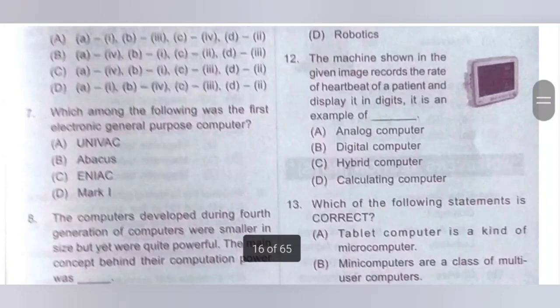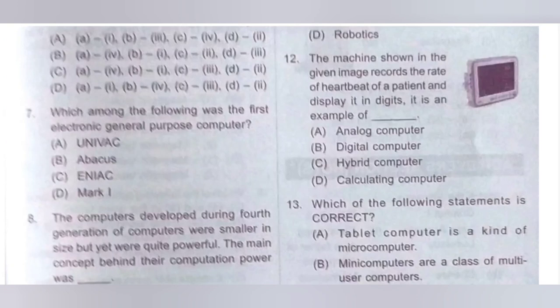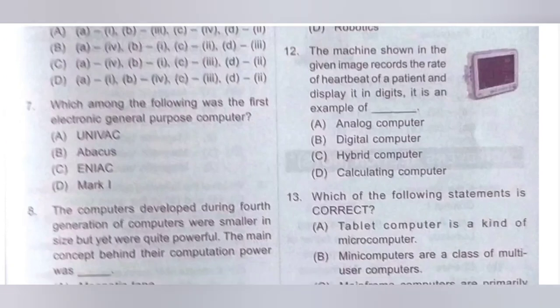12th question: The machine shown in the given image records the rate of heartbeat of a patient and displays it in digits. It is an example of dash. Options: A. Analog computer; B. Digital computer; C. Hybrid computer; D. Calculating computers. It is an example of a hybrid computer that exhibits features of both analog and digital computers. Option C is the correct answer.